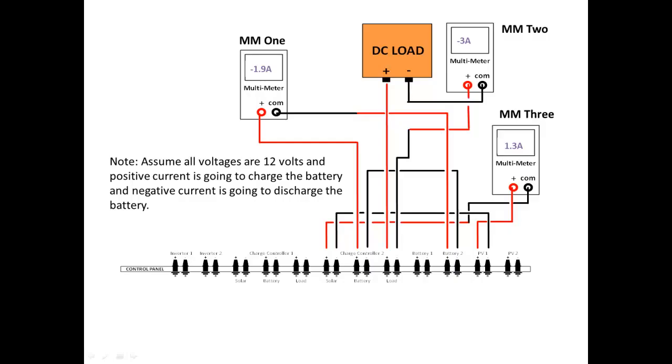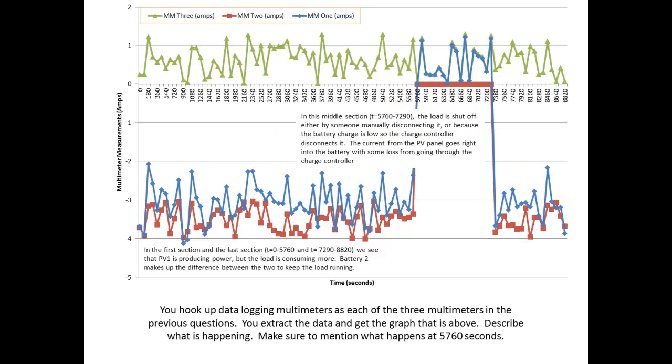In this video, we will discuss data logged with a 3 multimeter configuration as shown here. The output graph of the data logging is shown here. The y-axis is our multimeter measurements in amps and the x-axis is time. So here we have data logged for 8,820 seconds.